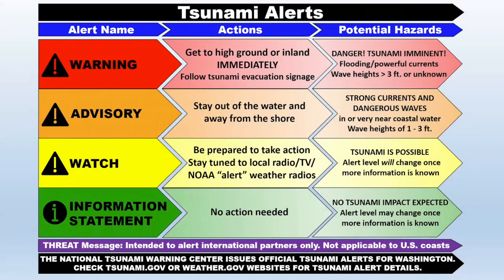Reviewing the four different alert levels: green information statement — no action needed. Yellow watch — there could be a tsunami, get your go bag, stay tuned, get ready to evacuate. Orange advisory — there is a tsunami on the way, one to three foot wave, strong and dangerous currents, stay out of the water and away from the shore. Red warning — a dangerous tsunami is on the way, wave heights three feet or higher, very powerful currents — immediately get to high ground or inland. A tsunami alert message will identify the number in the series, the date in Alaska time, and will clearly state where warnings and watches have been issued, the preliminary earthquake parameters including magnitude, time, depth, and location.